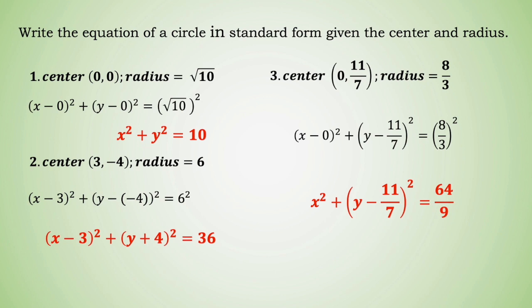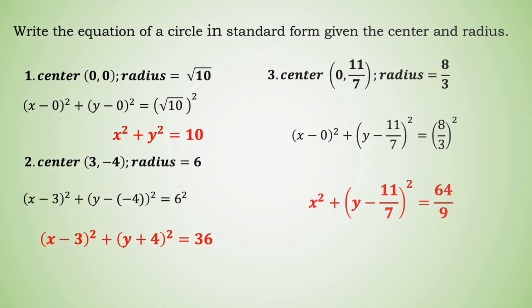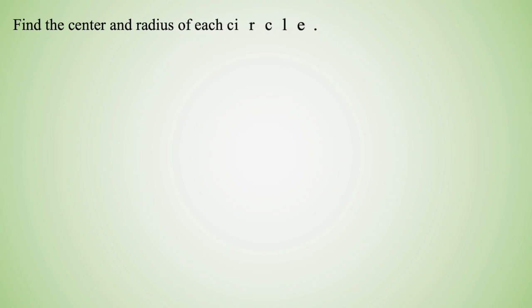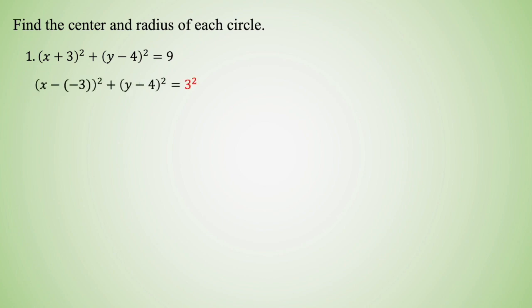On our next example we're going to do the opposite — the standard equation of the circle is given and we find the center and radius. For example, x plus 3 quantity squared plus y minus 4 quantity squared equals 9. Remembering the formula x minus h quantity squared plus y minus k quantity squared equals r squared, we identify x minus negative 3 and y minus 4. So the center is negative 3 comma 4 and the radius equals 3.